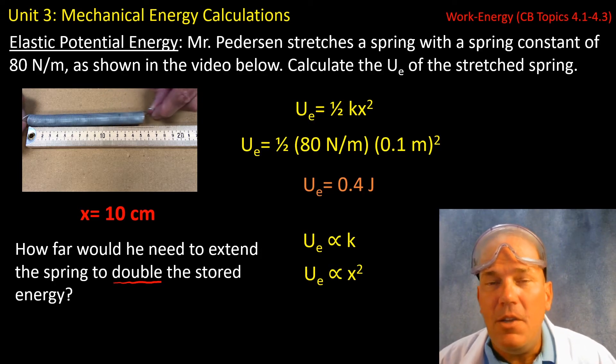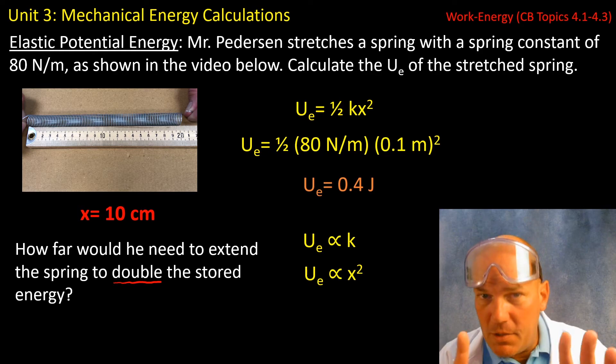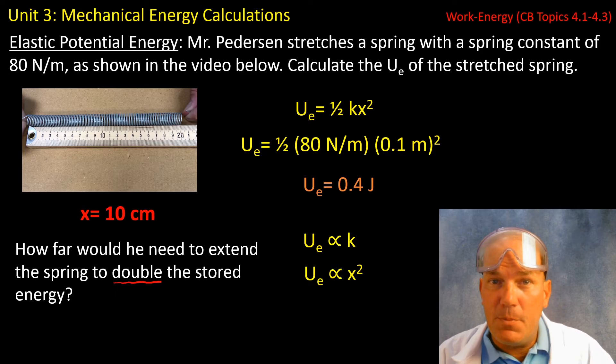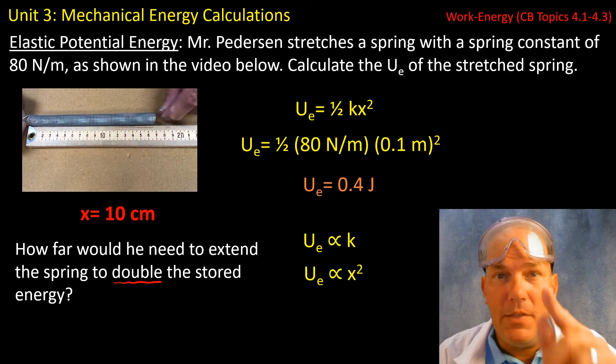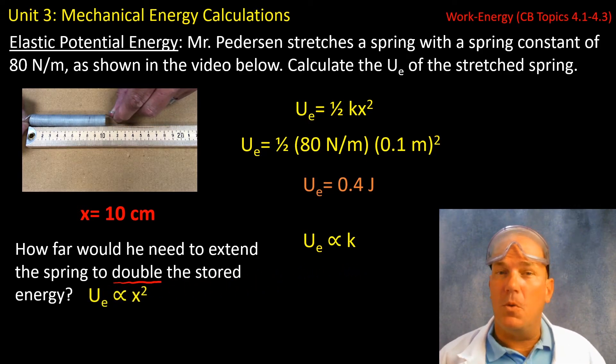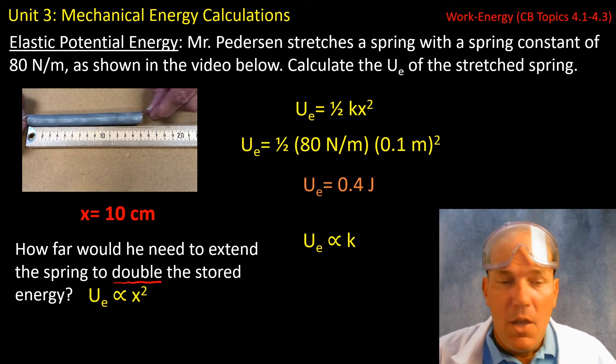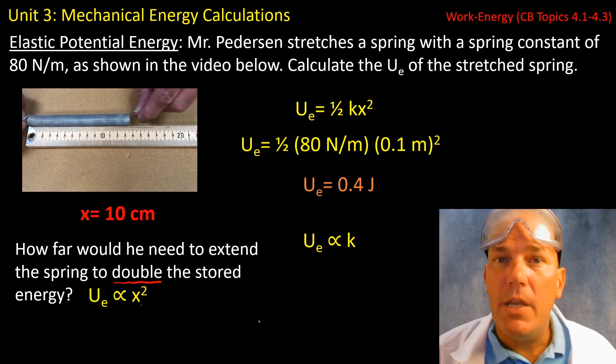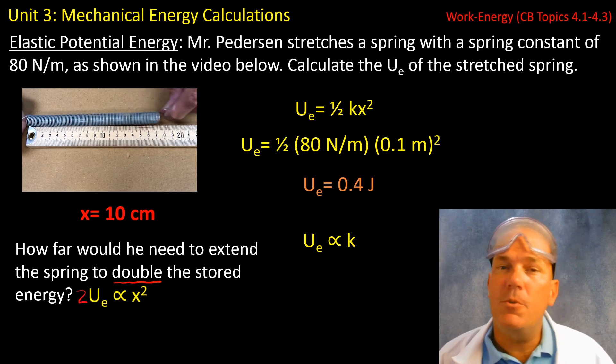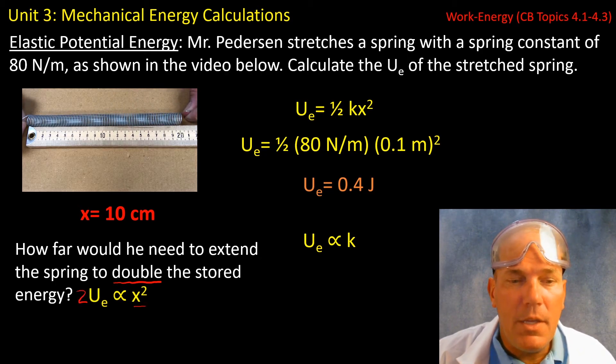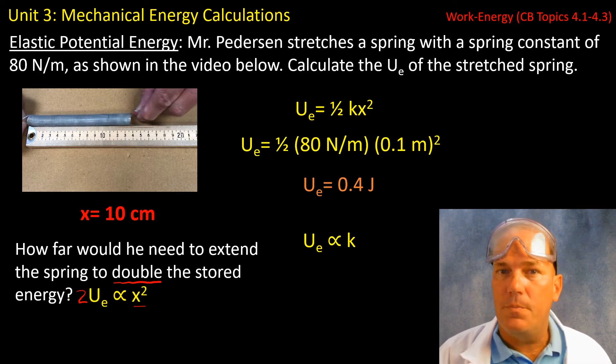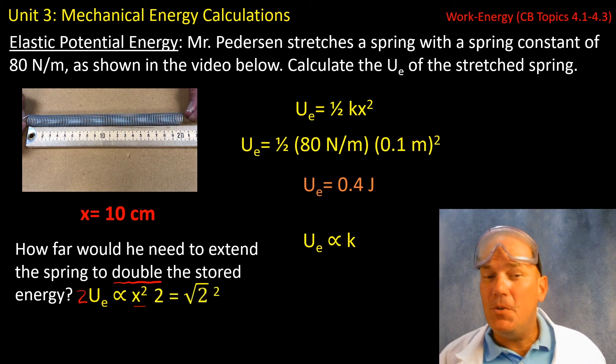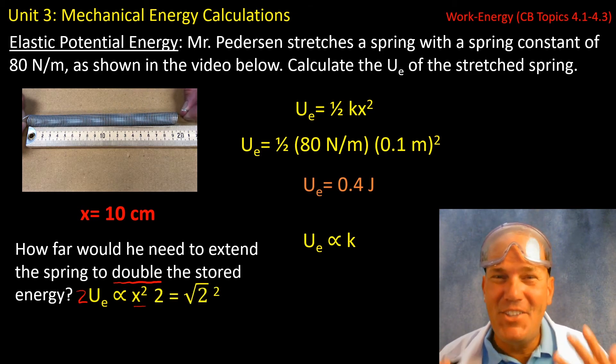Which means we're looking at this where the elastic potential energy, which I use interchangeably with spring potential energy, is proportional to the distance the spring is stretched squared. This is what we want to explore. The question becomes, what number can I put in here that when I square it I get 2? Because that's what I'm trying to get. What number do I put in here that when I square it gives me 2? Well, that number would be the square root of 2. Because the square root of 2 squared is 2.